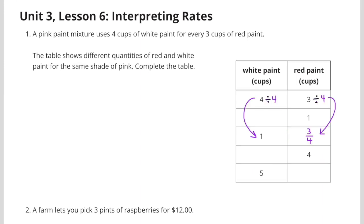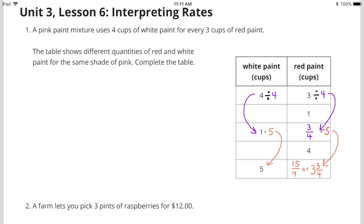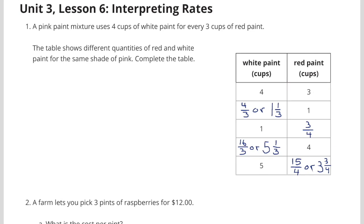I'm going to divide the 4 by 4 to get 1 on the white paint side, which means I need to divide 3 by 4 on the red paint side, which gives me 3 fourths. So for every 1 cup of white paint, I'll have 3 fourths cups of red paint. Now I can multiply 1 cup of white paint times 5 cups to get 5 cups of white paint. And if I multiply the white paint by 5, I must multiply the red paint by 5. So 3 fourths times 5 equals 15 fourths, or 3 and 3 fourths. Here's a look at the table with each of the quantities of red paint and white paint.